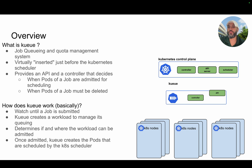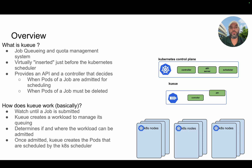Welcome to this presentation about Kueue. So what is Kueue? Kueue is a job queuing and quota management system. It's virtually inserted just before the Kubernetes scheduler and it is in charge of — when a job is submitted — deciding if it should be admitted for scheduling or deleted in case of resource scarcity, based on queue management.